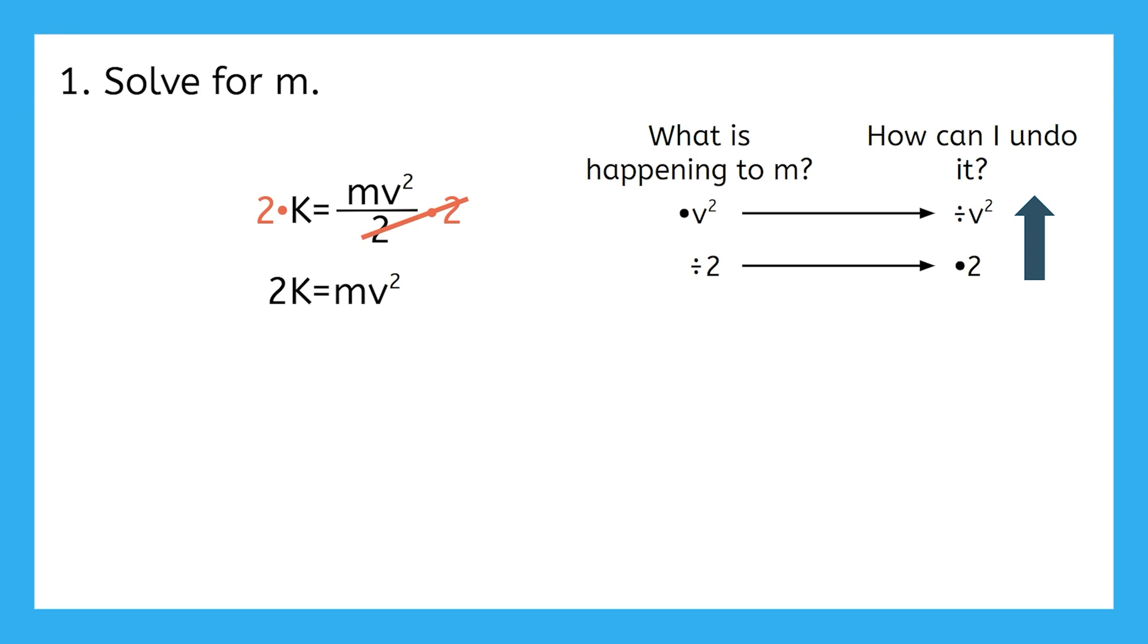Just like we would undo any other multiplication, we'll divide both sides by that V squared.